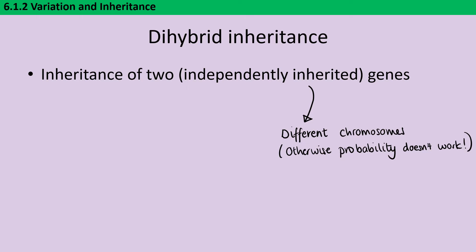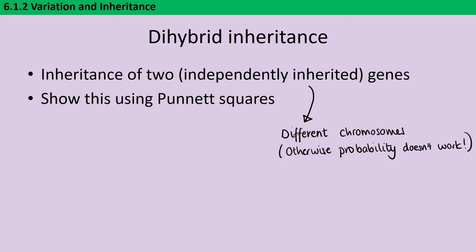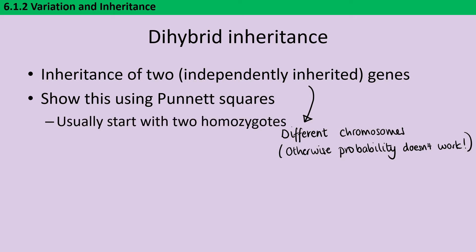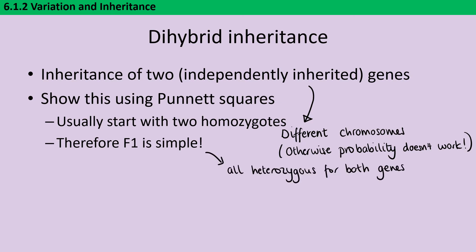We can show how this inheritance works using a Punnett square. The classic question takes two different individuals, each of which has one desirable trait. For instance, you could have a farmer wanting to grow tomatoes, picking one parent who has really red tomatoes and one parent who has really sweet tomatoes. Usually that means we're going to start with two homozygotes, and therefore our F1 generation would be really simple because everything is just going to be heterozygous for both genes.